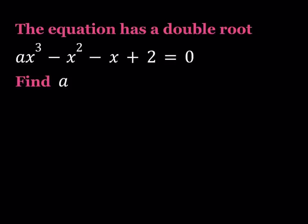Hello everyone. In this video we're going to be looking at a cubic equation with double roots. The equation ax cubed plus x squared minus x plus 2 equals 0 has a double root. This is a cubic equation — it has three roots, real and complex — and we're saying that x1 equals x2 and they're different from x3. In order for this equation to have a double root, what is the value of a?